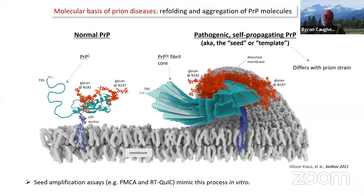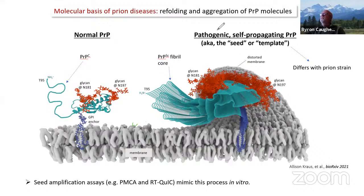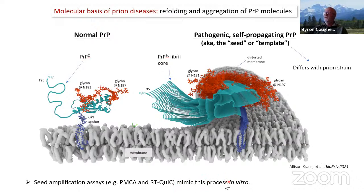The seed amplification assays used for prion disease diagnosis — including the protein misfolding cyclic amplification assay developed initially by Claudia Soto's lab and our RT-QUIC assays — mimic this process, at least to some extent in vitro, to allow massive amplification of prions in a test tube.